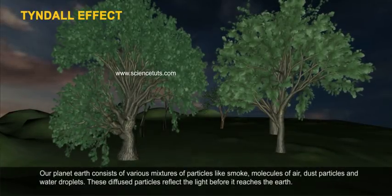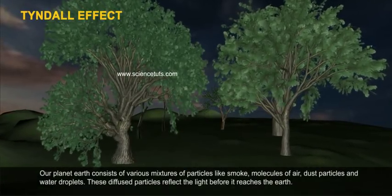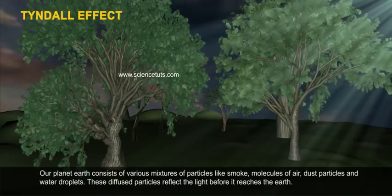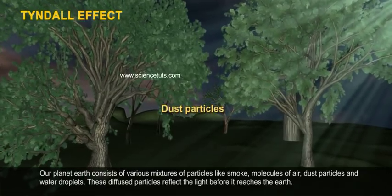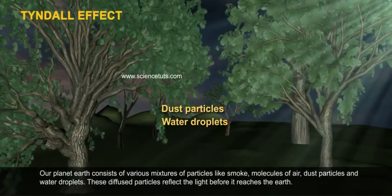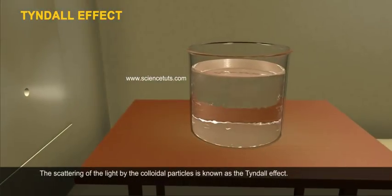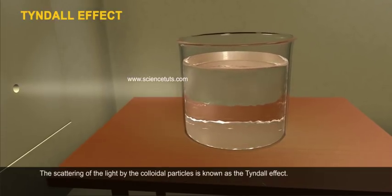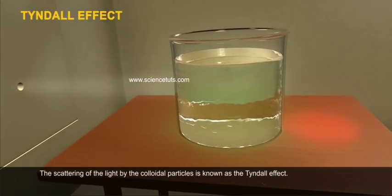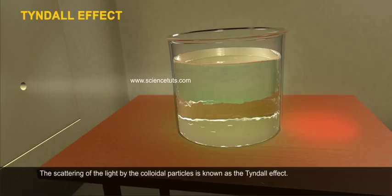Planet Earth consists of various mixtures of particles like smoke, air molecules, dust particles, and water droplets. These diffused particles reflect the light before it reaches the Earth. The scattering of light by colloidal particles is known as the Tyndall Effect.